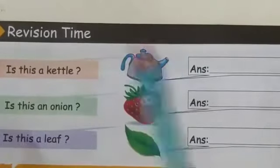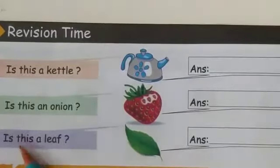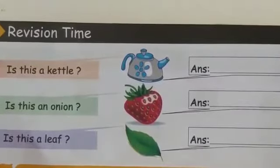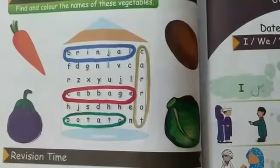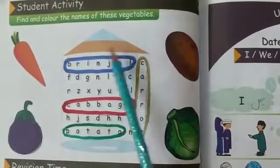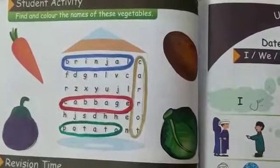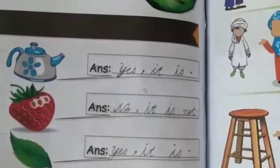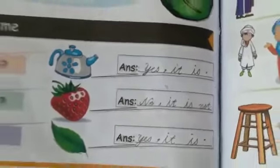The last segment is also very interesting because it is revision time — you are going to revise previously learned concepts. Look at the picture and read the question. Is this a cattle? Yes, it is. When you are giving the answer orally, speak it like this. But when writing, put a comma after 'Yes' and a full stop at the end of the sentence. Next question: Is this an onion? No, it is not.